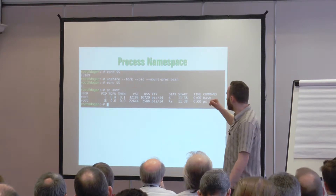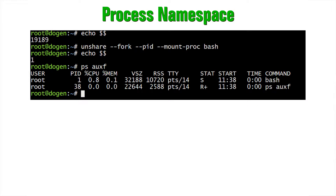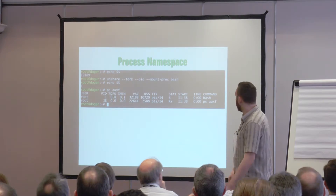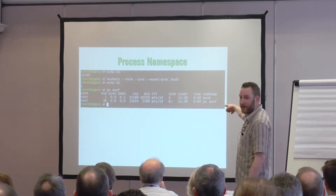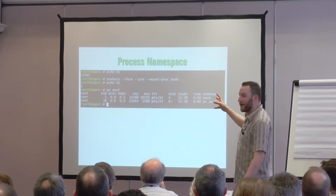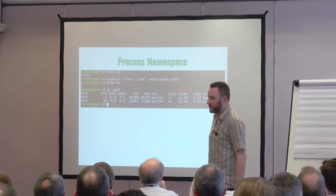Here's an example of the process namespace. I've got a Bash shell and I do echo $$ which gives me PID 19189. I fork a Bash shell with the --pid flag, giving it its own process namespace. When I do echo $$ now, my Bash thinks it's PID 1. The --mount-proc argument to unshare automatically remounts proc inside the namespace. Looking at the process list, I've only got Bash, and Bash is PID 1. It has no idea about any of the other processes — can't access them, can't send signals to them, even if running as the same user.